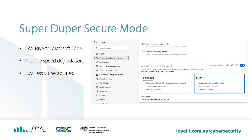So Microsoft have created Super Duper Secure Mode, which turns off this JIT compiler. The downside is that you may find some websites don't load as quickly as they used to. I've been using it for over a month now and have not noticed a difference at all. So the trade-off between security and speed, in this case, is a no-brainer — 50% less vulnerabilities and no noticeable difference.